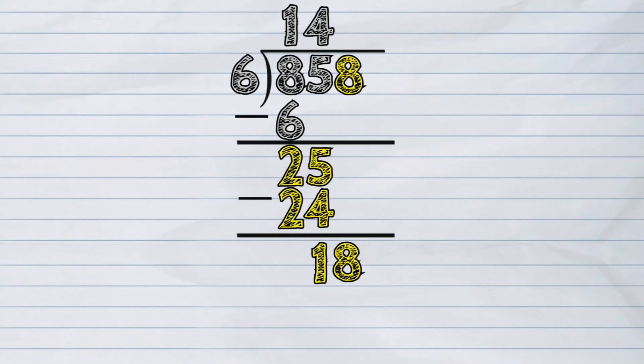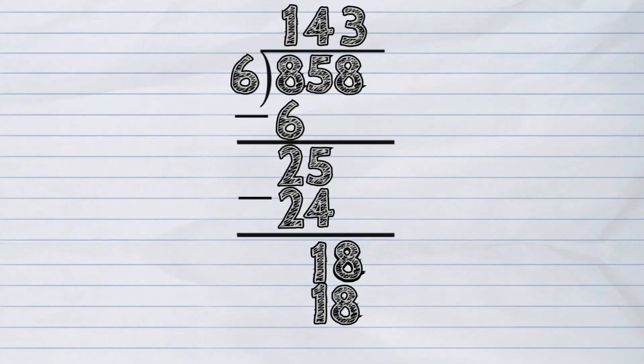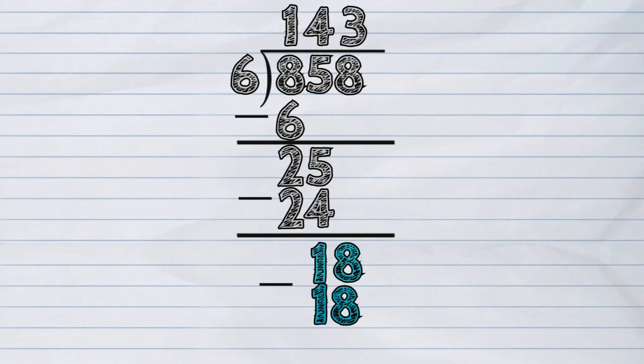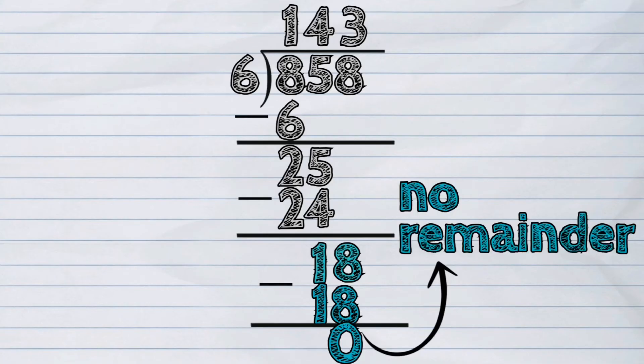Next, we repeat the step one process by dividing the eighteen ones by six. Eighteen divided by six, the answer is three. We write it next to four, then multiply three and six, which gives the answer of eighteen. Now we subtract eighteen from eighteen, which gives the answer of zero. This means that there is no remainder in this problem.